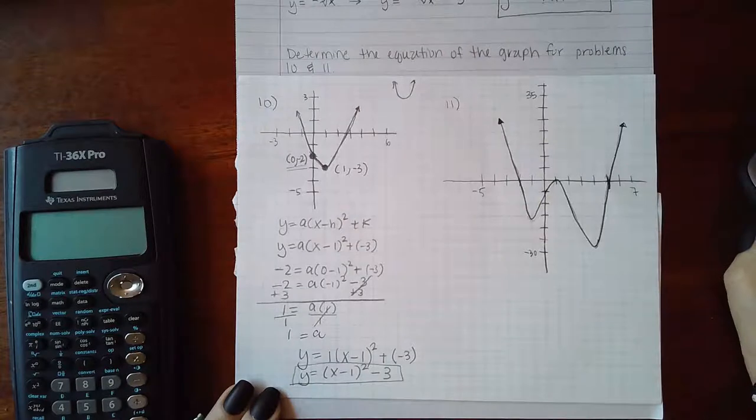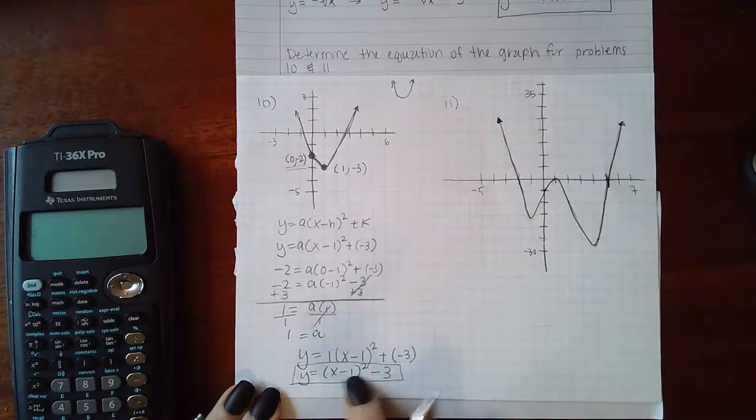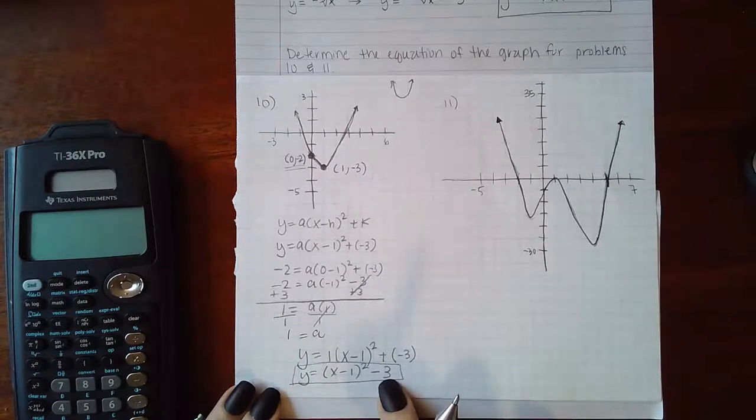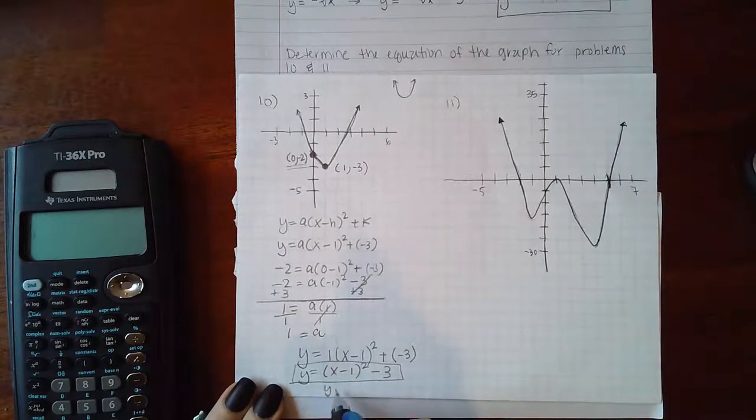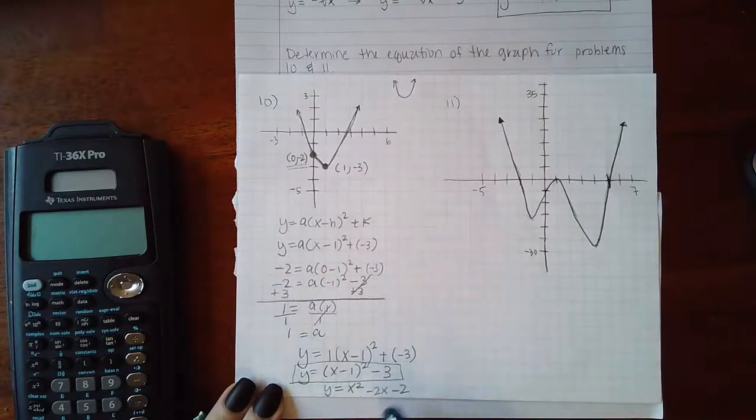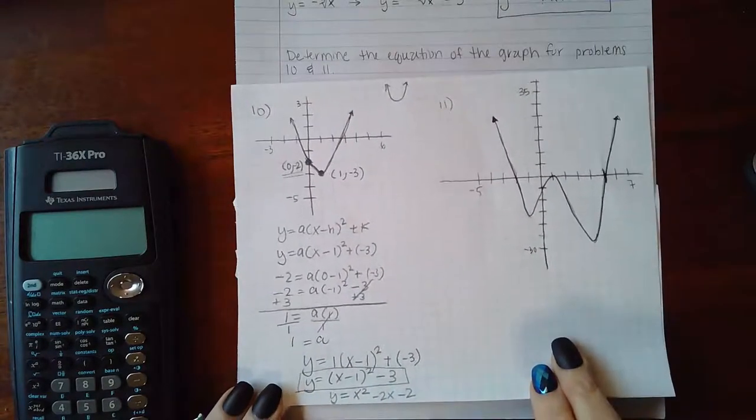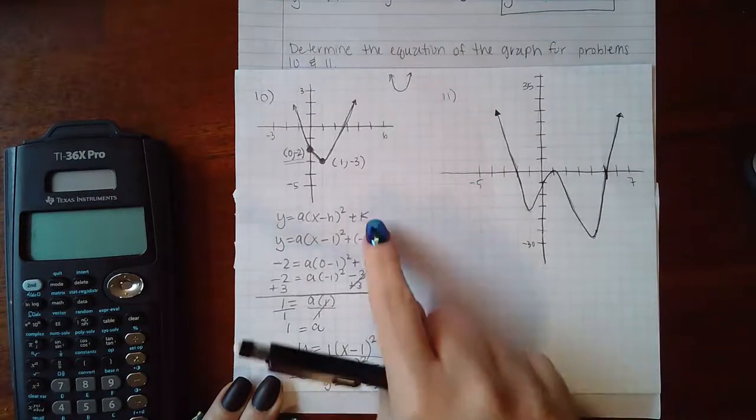Depending on what the choices are, this may be an acceptable answer. If you don't see the choices having something squared, you might want to foil this out. If this were multiple choice, it would also be the same as x squared minus 2x minus 2. These two equations are equivalent; this is what we get using the formula, and this is what I would get if I foiled this out and then minus 3.